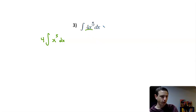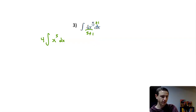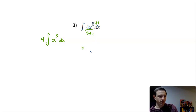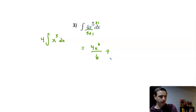Using the power rule, we add one to the exponent and divide by that new exponent — five plus one equals six. So if this becomes x to the sixth, taking the derivative would give six times four, and we divide by six to offset that multiplication, leaving us with just the four. We get 4x to the sixth over six, and don't forget when integrating we tack on that C.